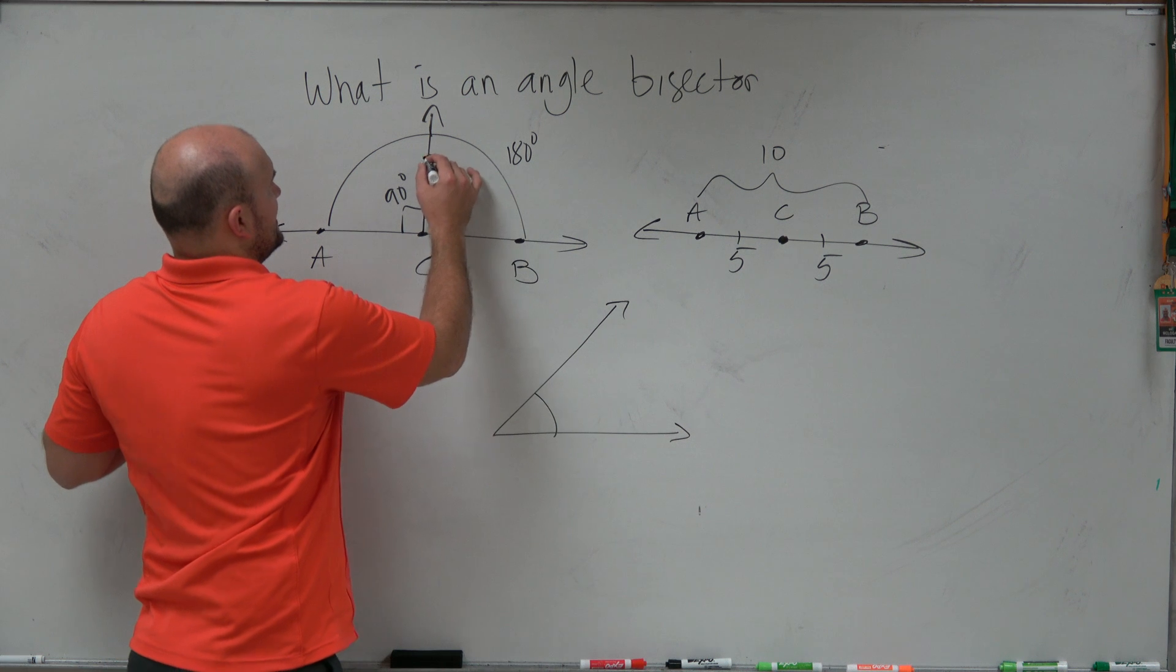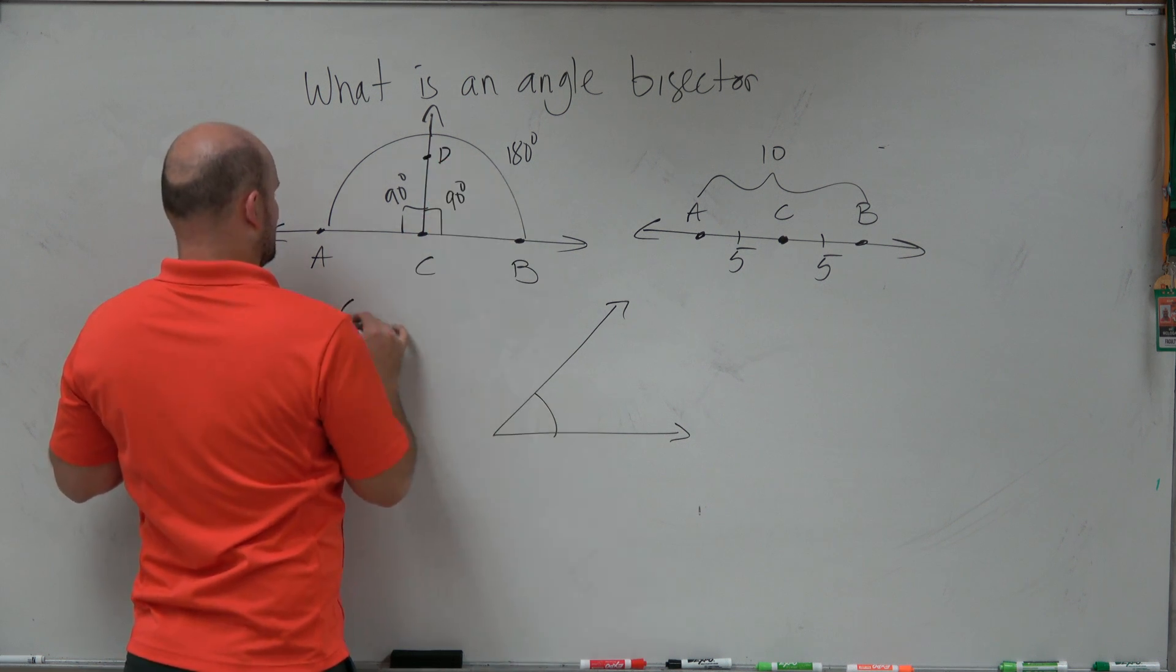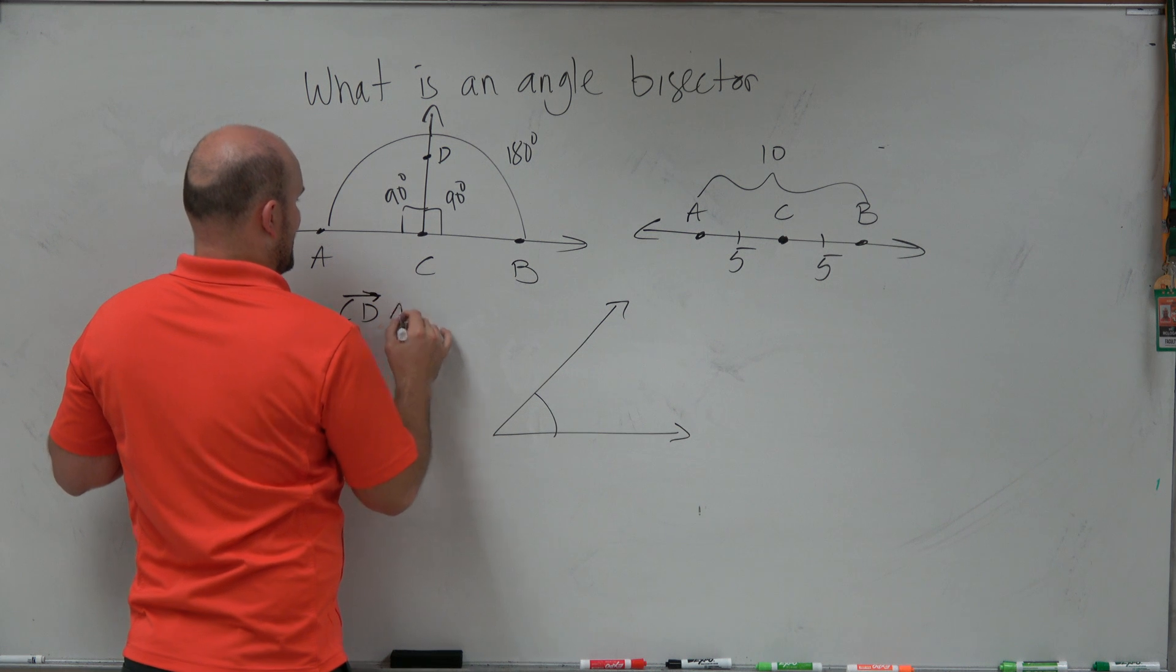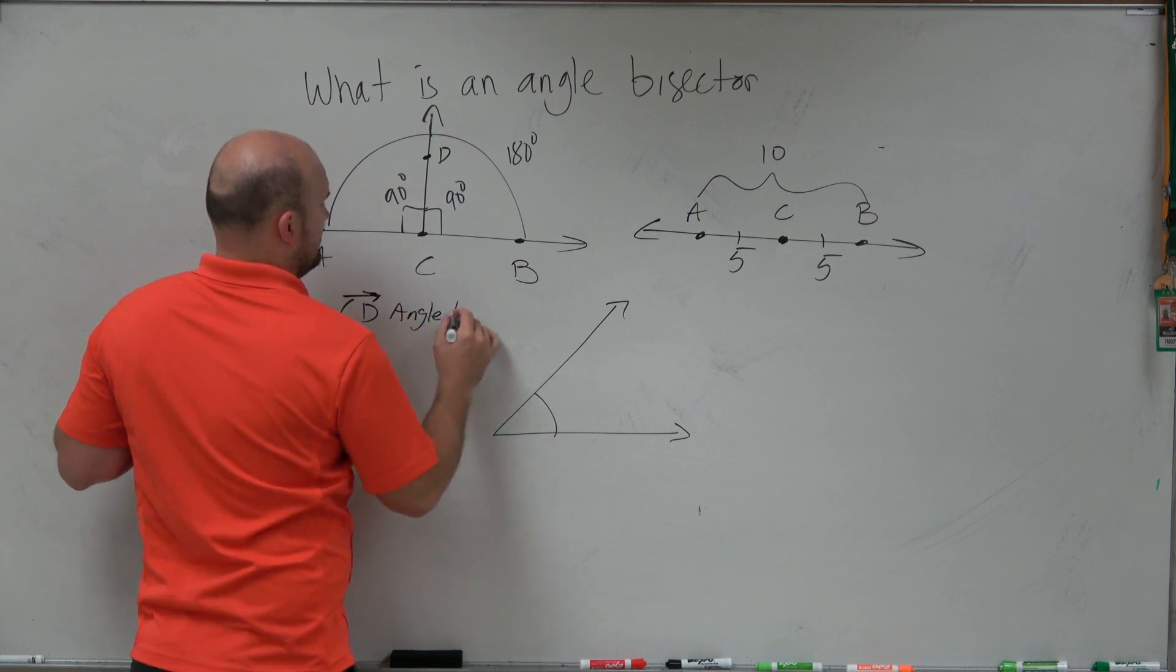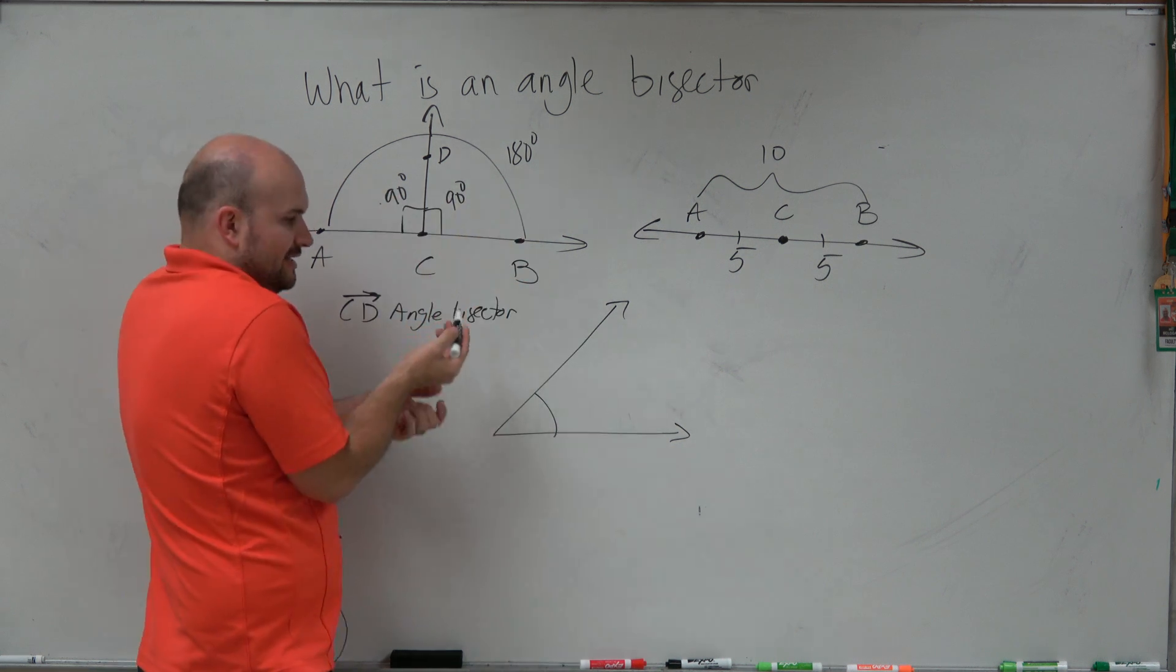That means this is your angle bisector. Let's call this D. CD is your angle bisector. But that's important because now I know that these two are the same, which are both 90 degrees.